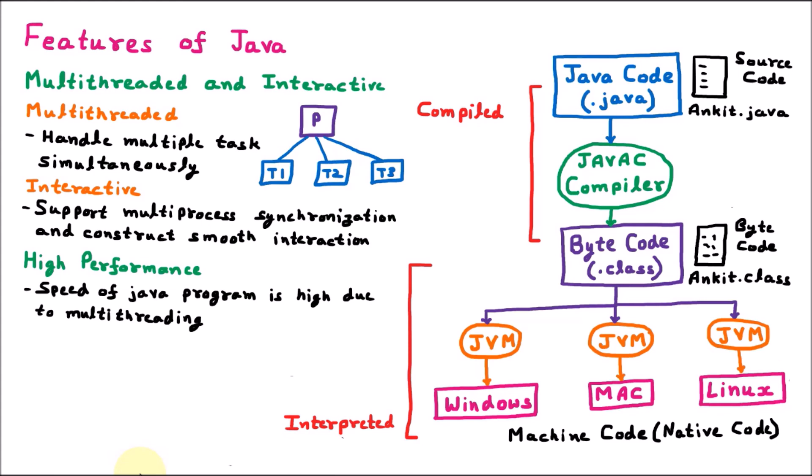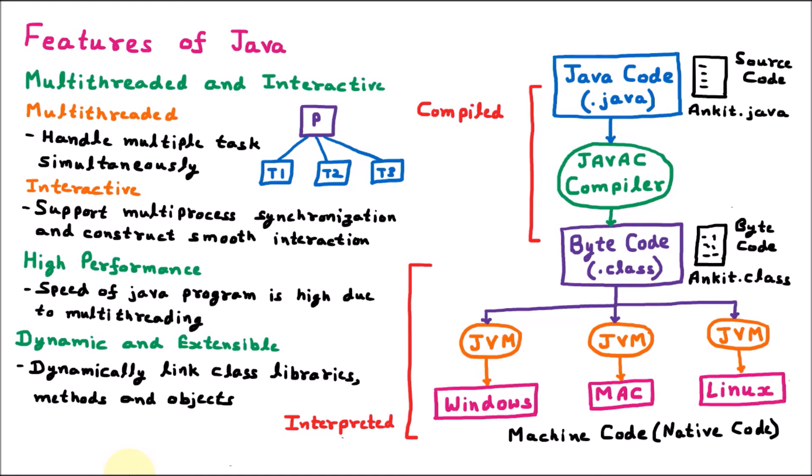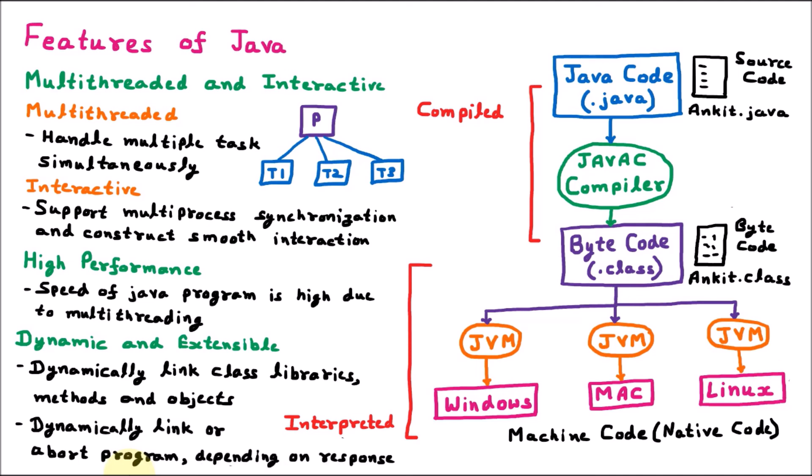The next feature of Java is that it is dynamic and extensible. Java is dynamic and extensible because when the Java program is running, it can dynamically link class libraries, methods, and objects. Also, Java can dynamically link or abort the program if required. At runtime, if libraries, methods, or objects are required, it can link them; or if instructed, Java can abort the program. Depending upon the response, Java can link and abort the program. That is all about the features of Java.